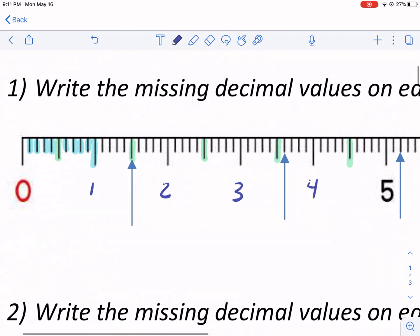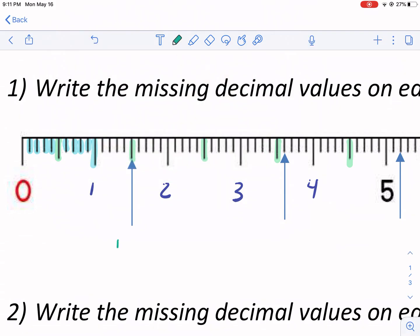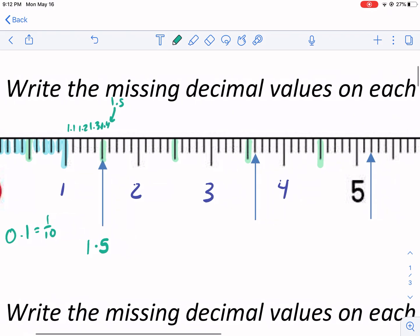Why is it a tenth? Because there are 10 values, 10 of those little marks in between 0 and 1, in each one of these whole numbers. So how do I do this? Well, this first one's fairly simple. It's right on a halfway point, so it's gonna be 1.5. Another way to think of it is this is 1.1, 1.2, 1.3, 1.4, 1.5. Each one of these is a tenth, and a tenth is equal to 0.1.